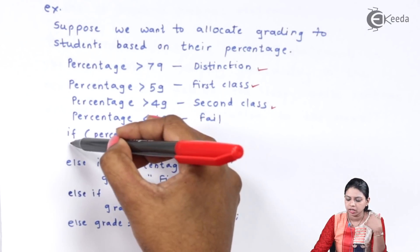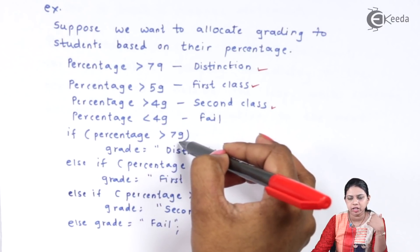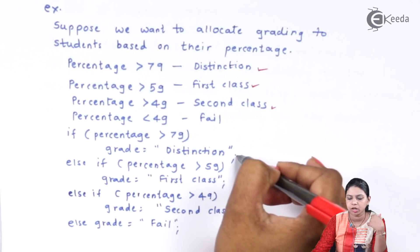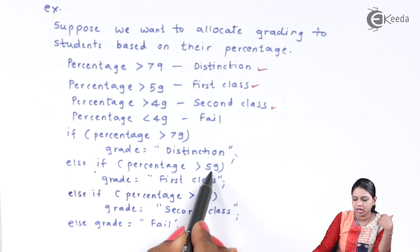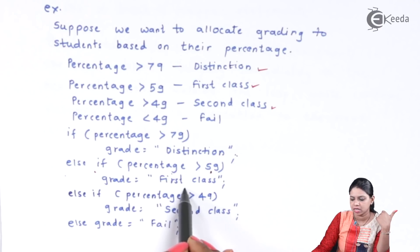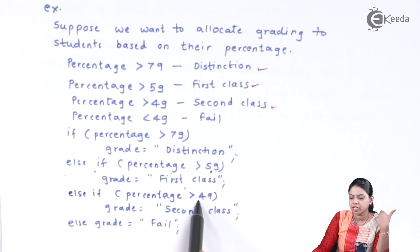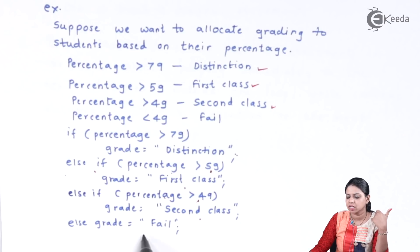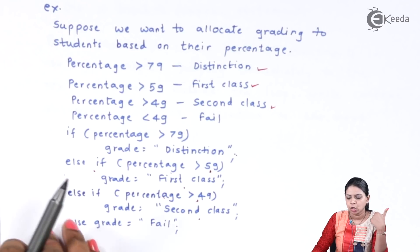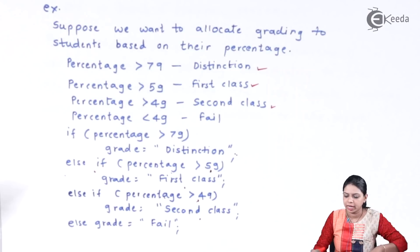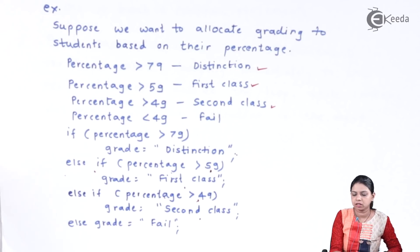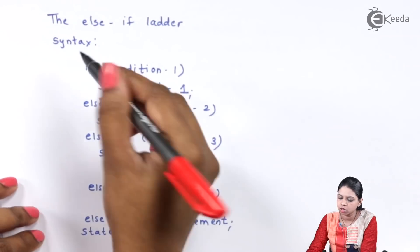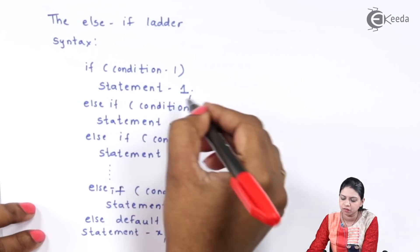I check: if percentage is greater than 79, grade is distinction. Else if percentage is greater than 59, grade is first class. Else if percentage is greater than 49, grade is second class. Else, grade is fail. This is how we use the else-if ladder. Let us compare this example against the else-if ladder syntax — if condition 1, statement 1.